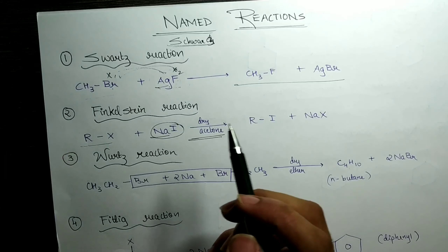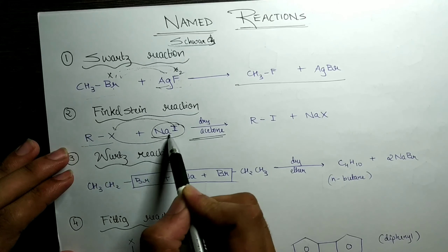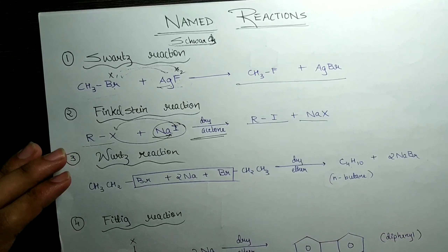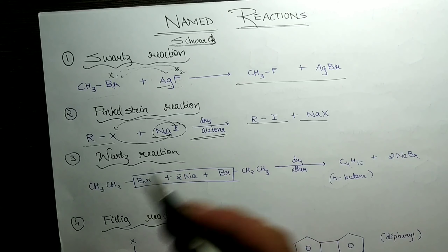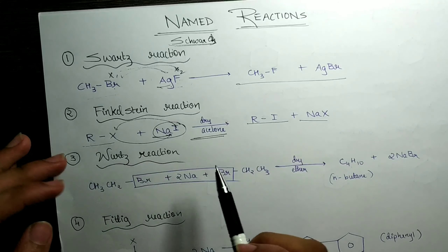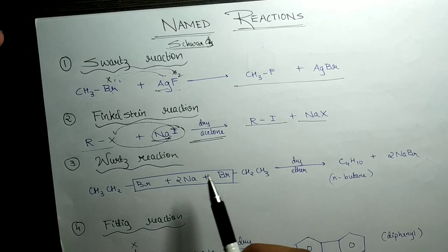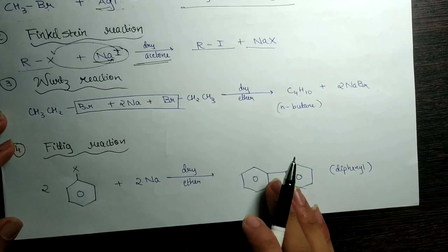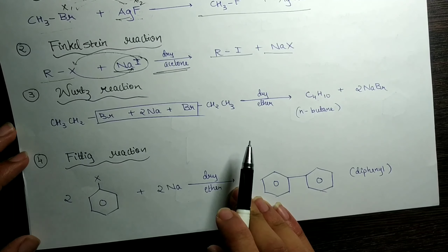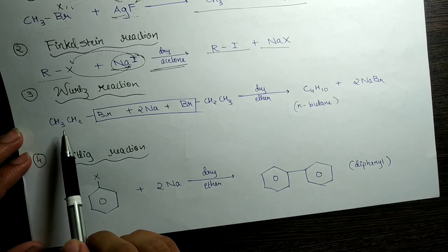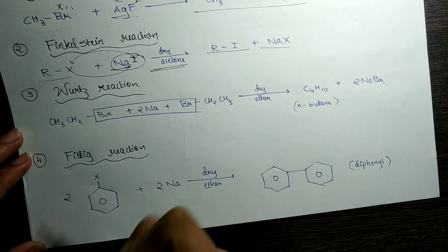This video will be completely from a boards point of view. The spelling makes a difference — you can't write it incorrectly, like mixing up 'CH' or 'CZ'. Don't mix up the spellings of Swartz reaction; that is very important because whoever is evaluating your paper might cut marks even for spellings. I have seen that, so please remember the spellings properly.